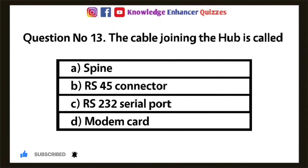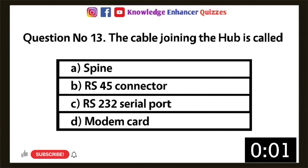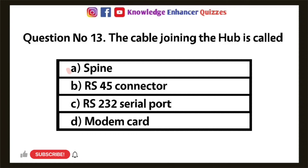Question 13: The cable joining the hub is called — Option A: Spine, Option B: RS-45 connector, Option C: Serial port, Option D: Modem card. Option A is the right answer.